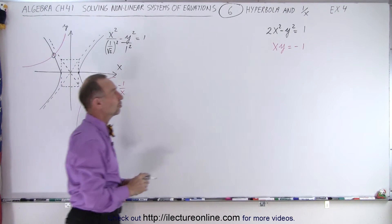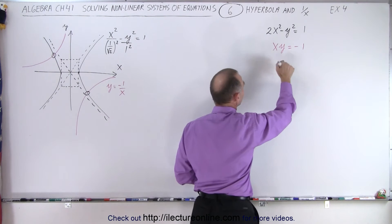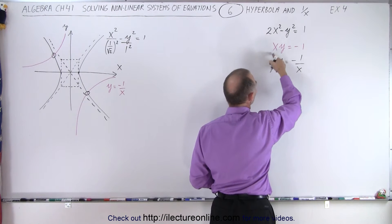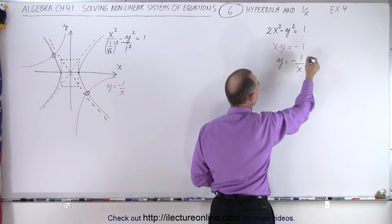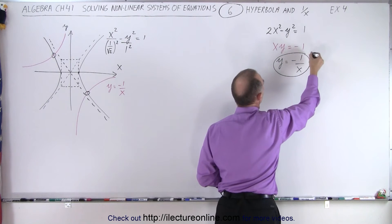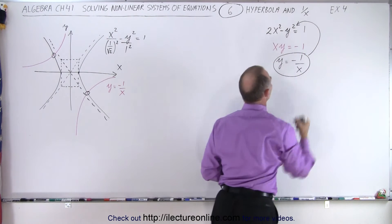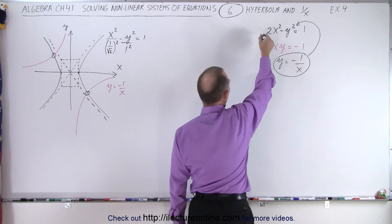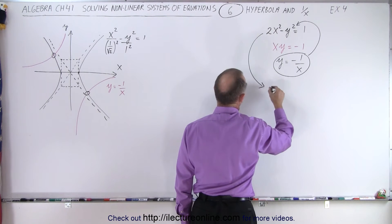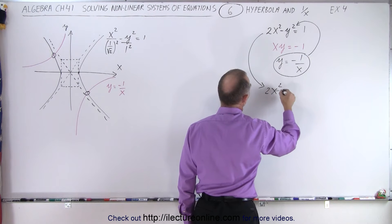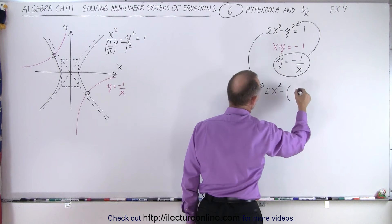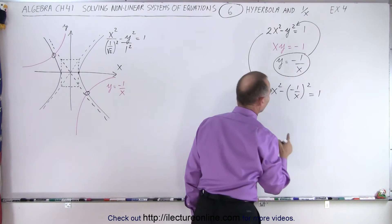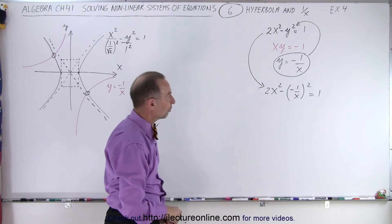What we can do here is solve this for one of the two variables. For example, y equals negative 1 over x by bringing x to the other side — we divide both sides by x and we get this. Now we can substitute that into our first equation to eliminate one of our variables. Our second equation becomes 2x squared minus, instead of y, we write negative 1 over x, quantity squared, is equal to 1. And we solve this equation for x.